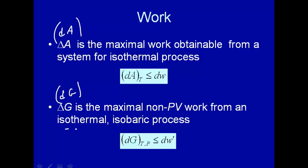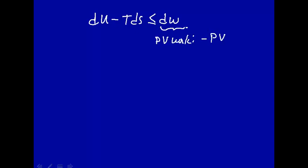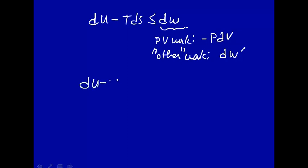Let's make the same arguments for delta G, where we'll have constant temperature and constant pressure. We start with the combined first and second laws: dU minus T dS is less than or equal to dW. For the Gibbs free energy, we break the work up into PV work, which is minus P dV, and other work, which we'll denote as dW prime. So dU minus T dS is less than or equal to minus P dV plus dW prime, where dW prime is non-PV work.